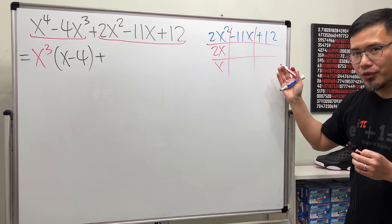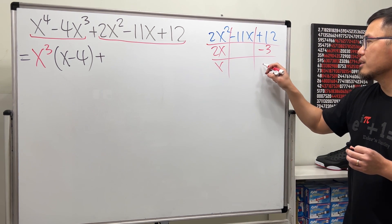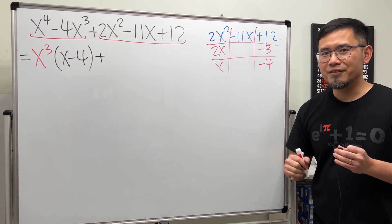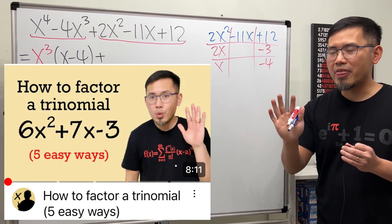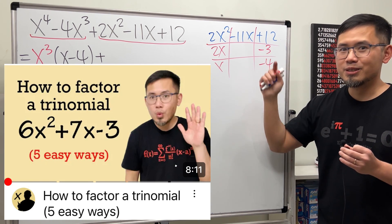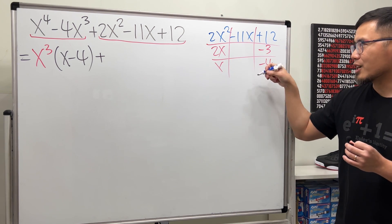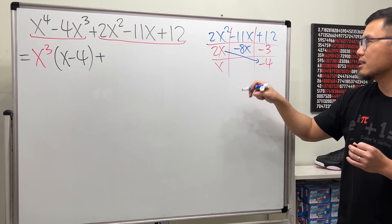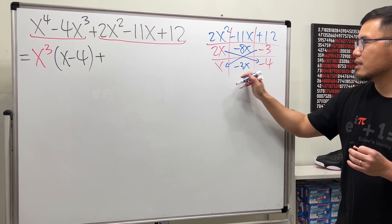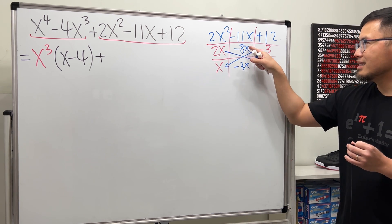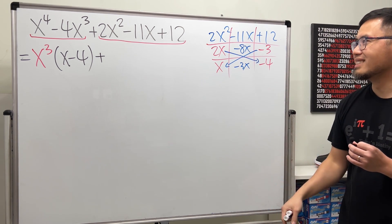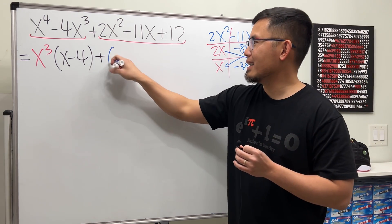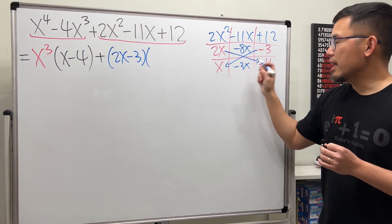We will use negative 3 and negative 4. Negative 3 will go here, negative 4 will go here. You can try it with different methods — I have a video showing five different methods of factoring a quadratic trinomial like this. This is the correct combination because 2x times negative 4 is negative 8x, and negative 3 times x is negative 3x. So this and that is negative 11x — that means we know it's correct. And the factoring for this is 2x minus 3 and x minus 4.